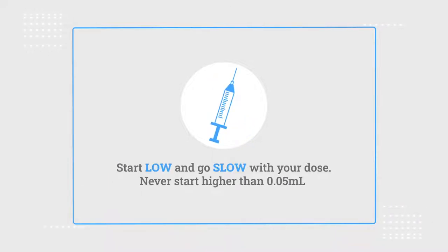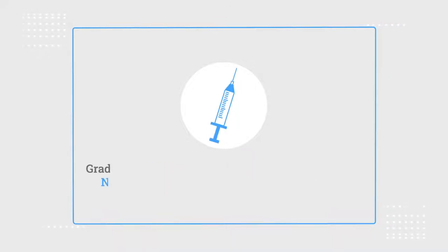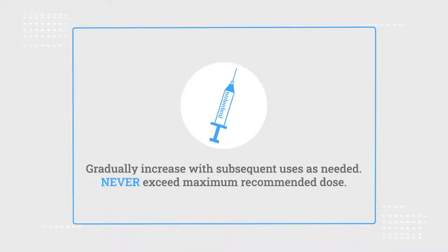Start low and go slow with your dose. Never start higher than 0.05 milliliters or 5 units on syringe for the first injection. Start there and gradually increase for optimal results.